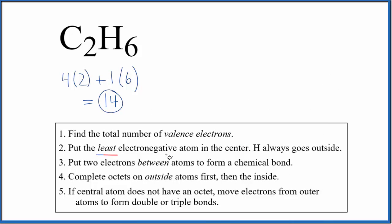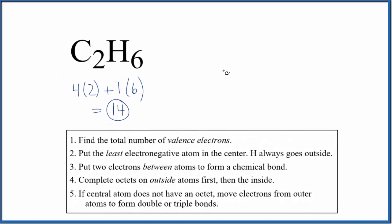So we put the least electronegative atom in the center, but hydrogen, that always goes on the outside. So let's put the two carbons surrounded by six hydrogens, like this.